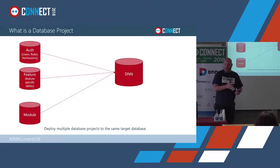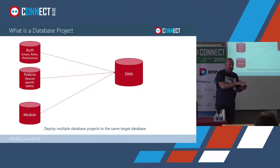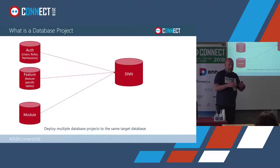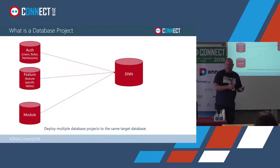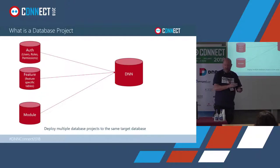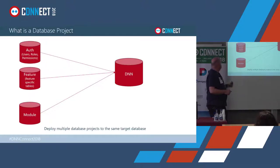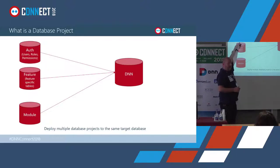You could go further — even in the core, you could have a database project for authorization-related things and a database project for pages or content-related things. So you can separate out your database projects related to the concerns in the database. If you're doing content-related things, you might not need anything related to authorization, but if you do, you can reference that project. So one feature database project can reference another.